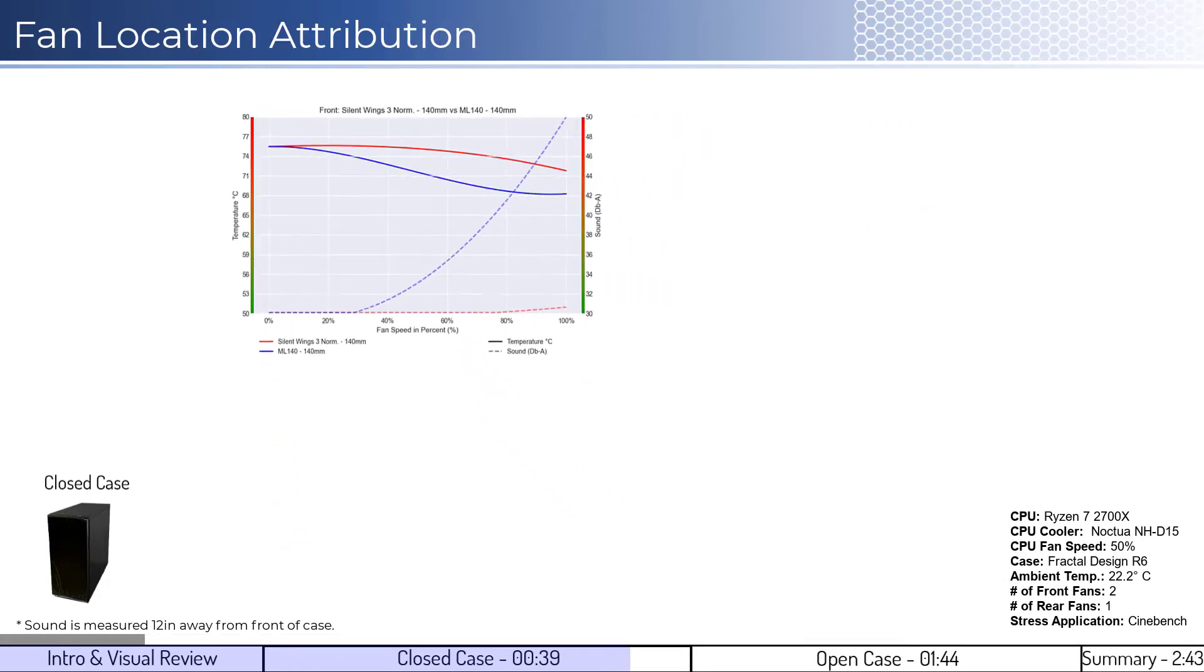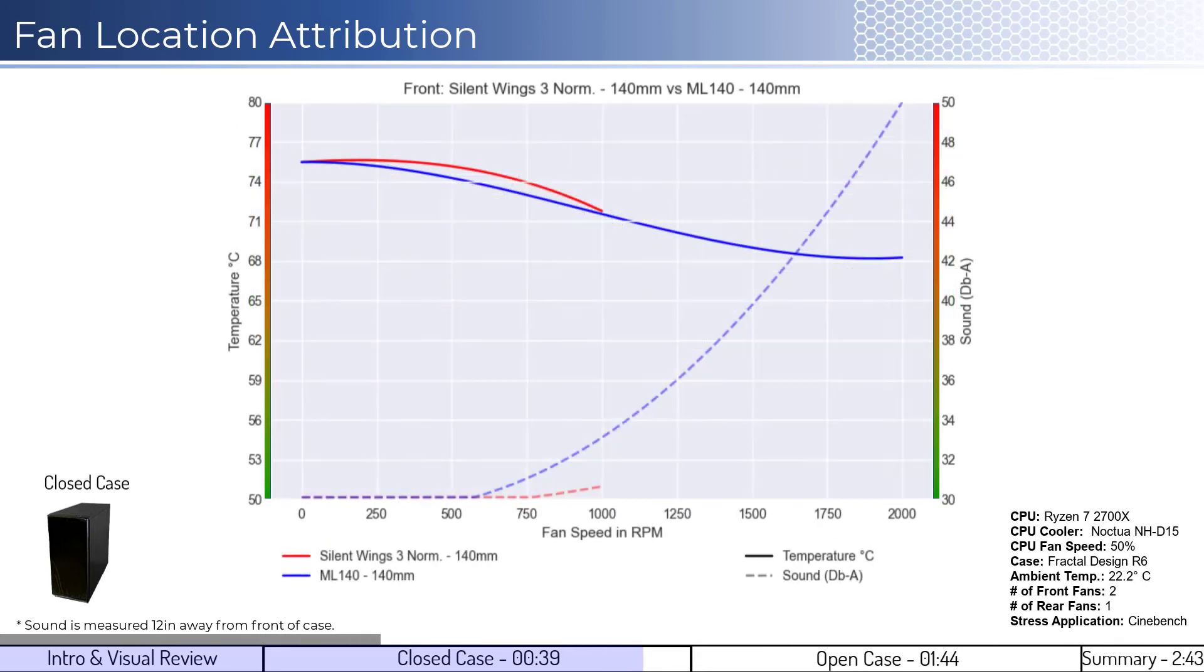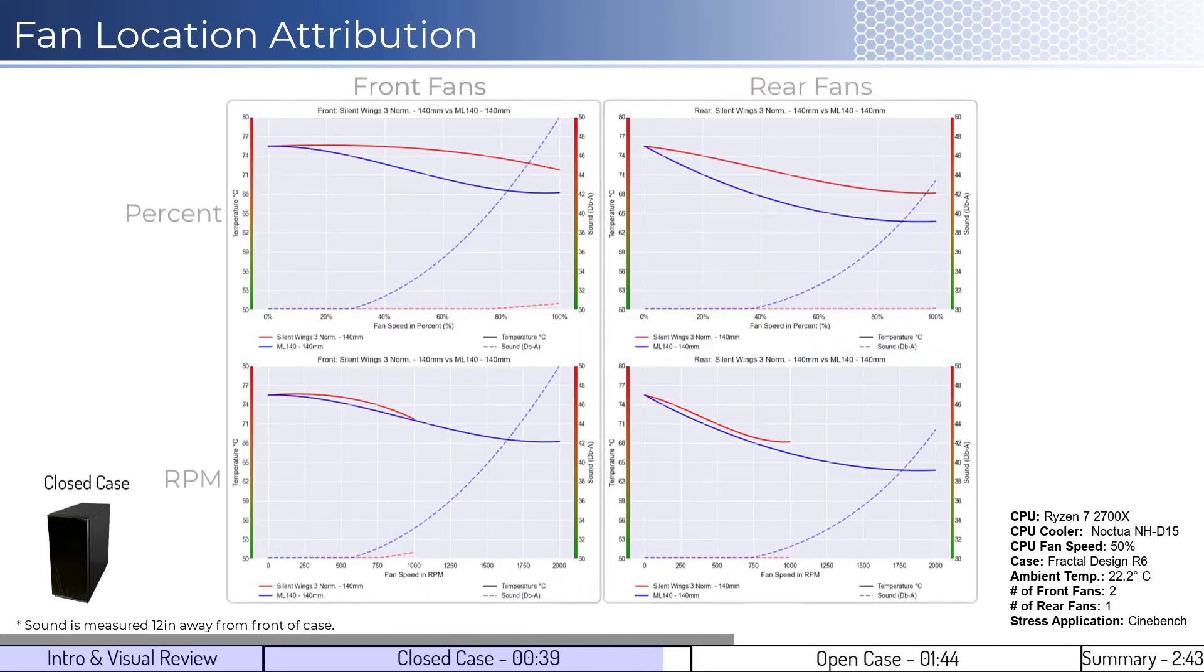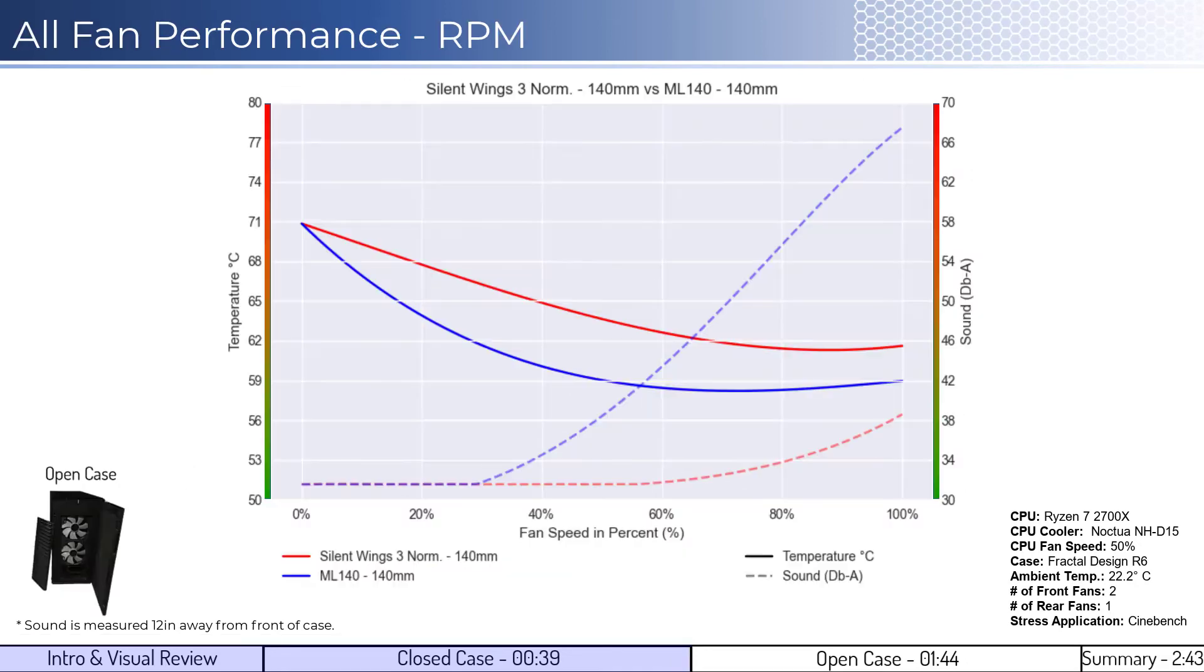When looking at the open case front and rear attribution for the fan's performance on a percent and RPM basis, we can see that the fans have similar performance noted in the all-fan compare. For the second set of comparisons, we will look at the open case design, which helps us understand which fan is better at creating airflow.